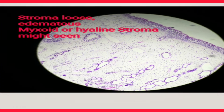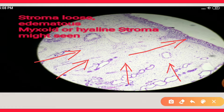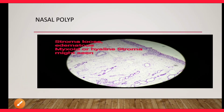In the nasal polyp figure, you can see the polyp is lined by pseudostratified columnar epithelium, below which there is a loose stroma containing mucoid material. The respiratory tract produces mucus from mucous glands, so this mucoid material is seen in the stroma. This is the histopathological appearance of nasal polyp. A detailed video on nasal polyp is available in the respiratory epithelium playlist.